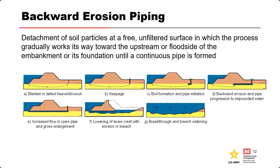Backward erosion piping typically happens in relatively clean sand — fine to medium with a coefficient of uniformity of about three to four. It is the detachment of soil particles at a free, unfiltered surface at the downstream end, where the process gradually works its way upstream until a continuous pipe is formed. It's probably restricted to non-plastic soils or soils with only limited plasticity. To occur, there must be a flow path or source of water, an unprotected exit from which material can escape, or a thin enough confining material that pressures can break through.